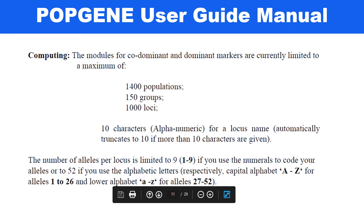A limitation of this software is that it handles a limited number of populations — maximum up to 1,400 populations, a total of 150 groups, and a maximum of 1,000 loci. The number of alleles per locus is limited to 1–9 if you use numerals to code your alleles, or up to 252 if you use alphabetic letters — A to Z for 1 to 26, and lowercase a to z for 27 to 52 — to code your genotype data.